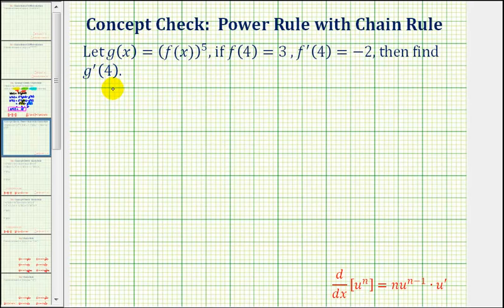This question is testing to see whether we recognize that g of x is a composite function, and therefore to find g prime of x, we need to apply the chain rule of differentiation. G of x is a composite function because the inner function is f of x, and the outer function is the power function raising this to the fifth power.